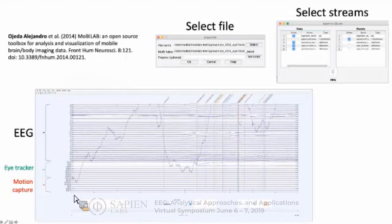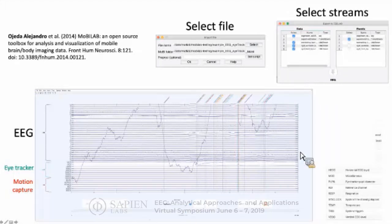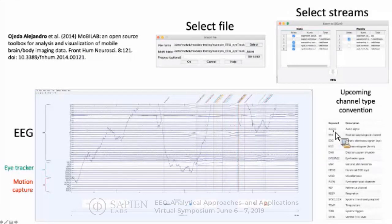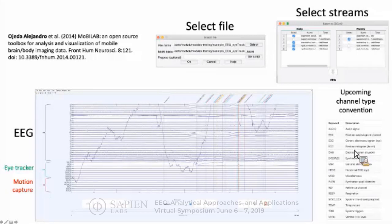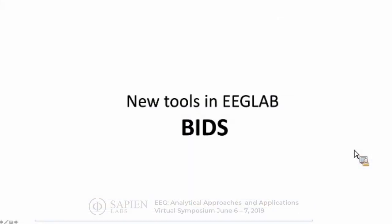About multimodal data, I also want to mention an upcoming channel convention for channel types. We're increasing the number of channel types in EEG Lab and making it consistent with a framework called BIDS. This will allow increased support for BIDS and help with integration with the BIDS tool — another tool we're trying to integrate into EEG Lab.